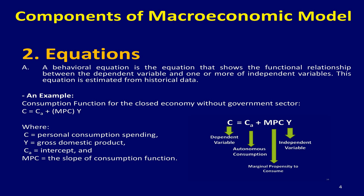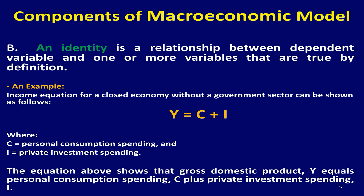For example, the consumption equation for a closed economy without a government sector can be displayed as: C = CA + MPC·Y. C refers to personal consumption spending, Y refers to gross domestic product, and CA and MPC are coefficients. This equation shows a positive relationship between C as the dependent variable and Y as the independent variable — as Y increases, C will increase, and vice versa.